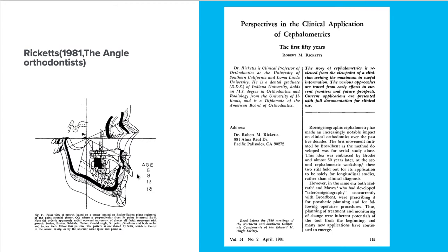Dr. Ricketts wrote articles many times — in 1960 and 1981 — about treatment planning and estimating growth. Estimating growth is a very special point. Other cephalometric analyses do not comment about growth, but Ricketts does comment on growth. This 1981 article appeared in the Angle Orthodontist, and this figure shows the age change.